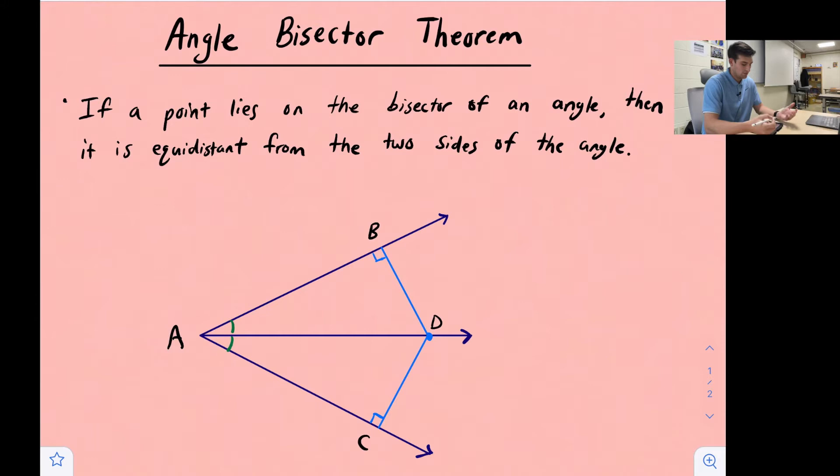It says if a point lies on the bisector of an angle, then it is equidistant from the two sides of the angle.